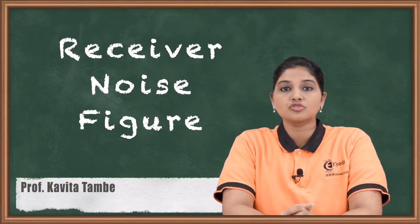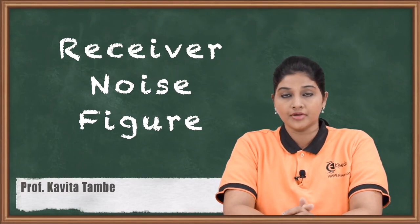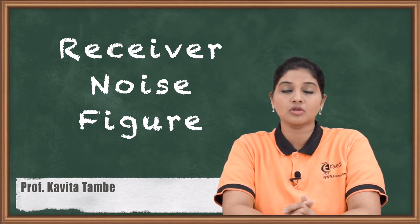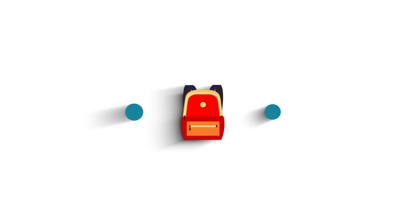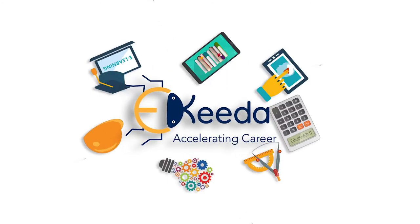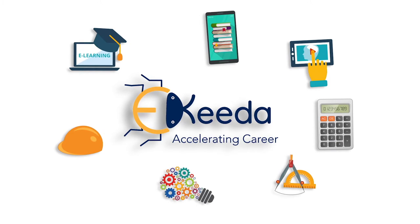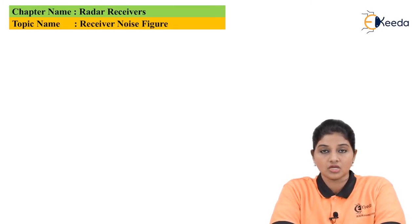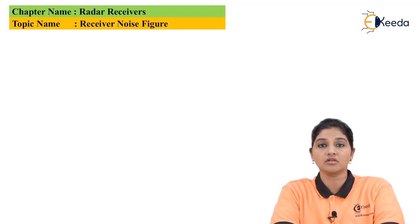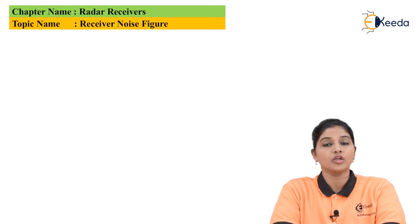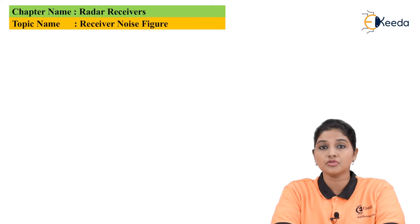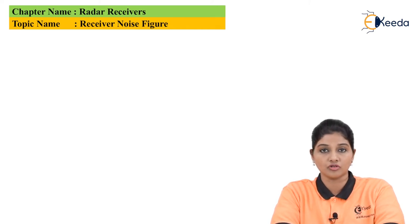Hello friends, in this video we are going to talk about one of the important parameters that determines the performance of a radar system, and that is nothing but receiver noise figure. We know that the radar receiver basically uses super heterodyne receivers, and the receiver has rigorous requirements. In order to determine the effect of various parameters on the operation of the radar system, it is very much important to consider the receiver noise figure.